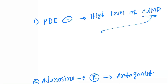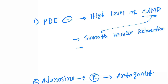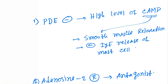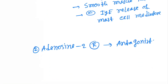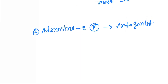Elevated cAMP causes smooth muscle relaxation and also inhibits IgE-mediated release of mast cell mediators. Regarding the second mechanism — adenosine-2 receptors — adenosine causes bronchoconstriction.